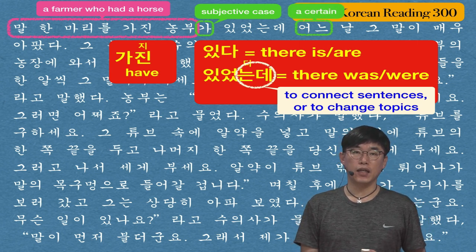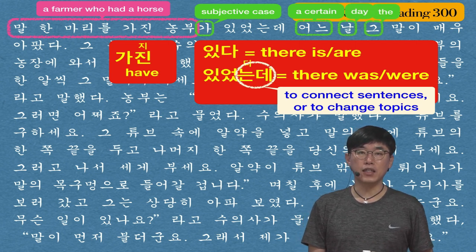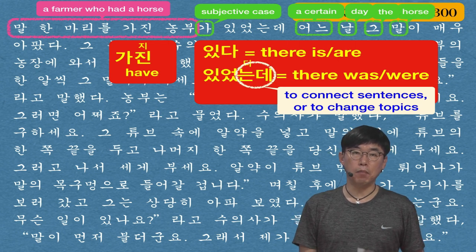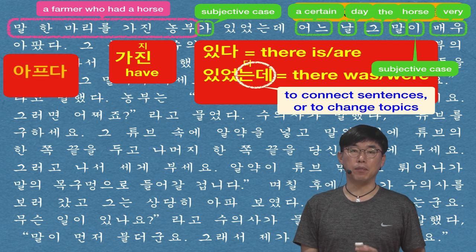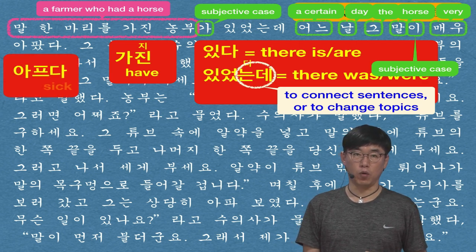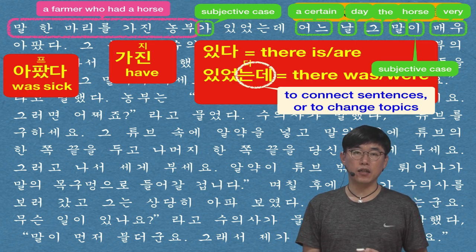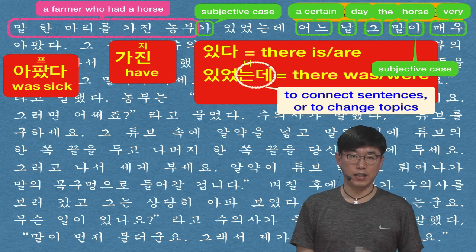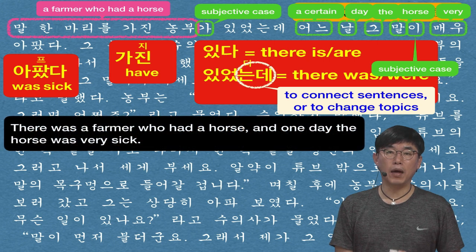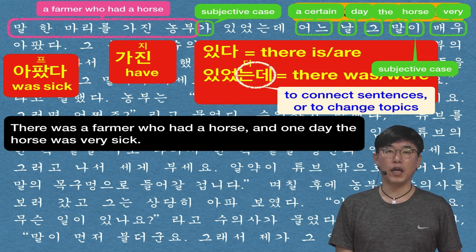어느 is 'a certain' and 날 is 'day.' 그 is 'the,' 말 is 'horse,' 매우 is an adverb meaning 'very,' and 아팠다 came from 아프다 (sick/ill) — the vowel 프 is replaced with 팠 to form the past tense, so 아팠다 is 'was sick.' So the full first sentence: 말 한 마리를 가진 농부가 있었는데 어느 날 그 말이 매우 아팠다 — There was a farmer who had a horse and one day the horse was very sick.